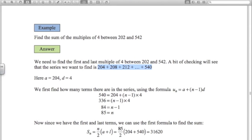Since we have the first and last terms, we can just use that first formula that Gauss gave us. n over 2, so 85 over 2. The first term is 204, the last term is 540. There is the sum of all the multiples of 4 between 202 and 542.